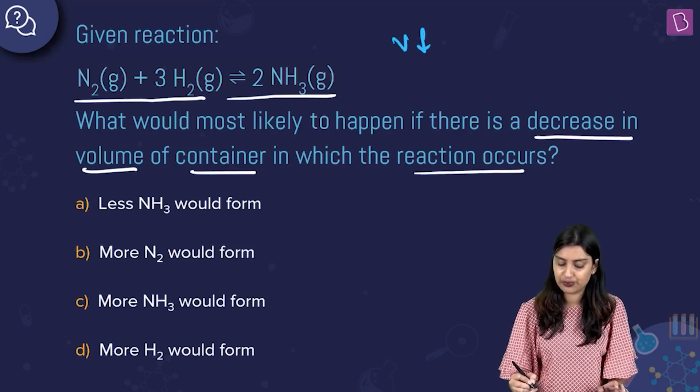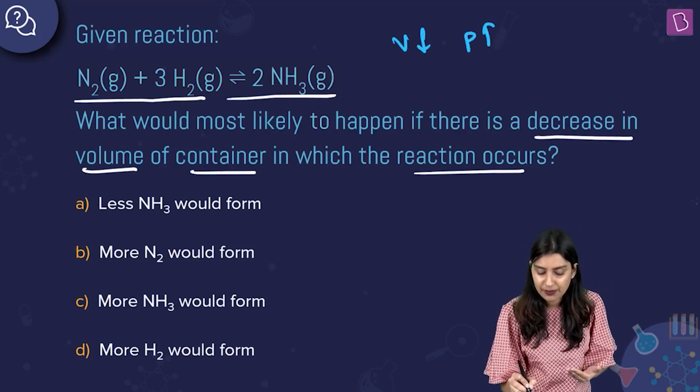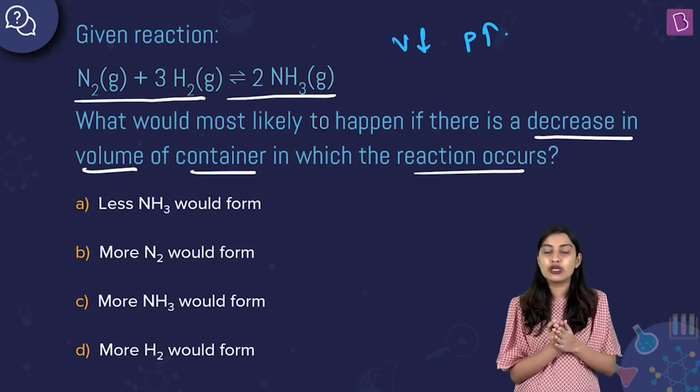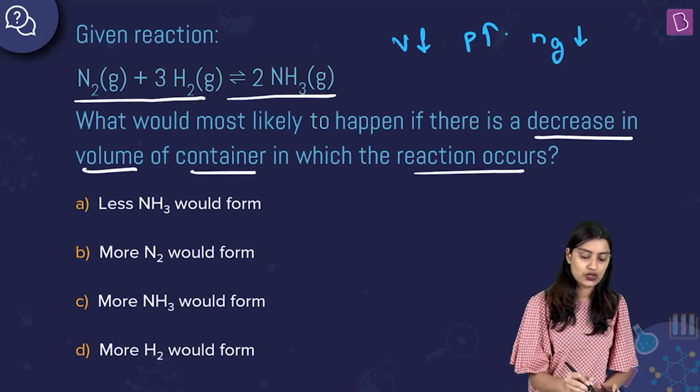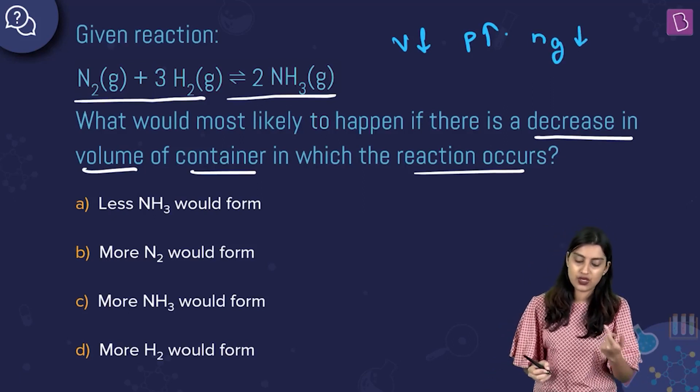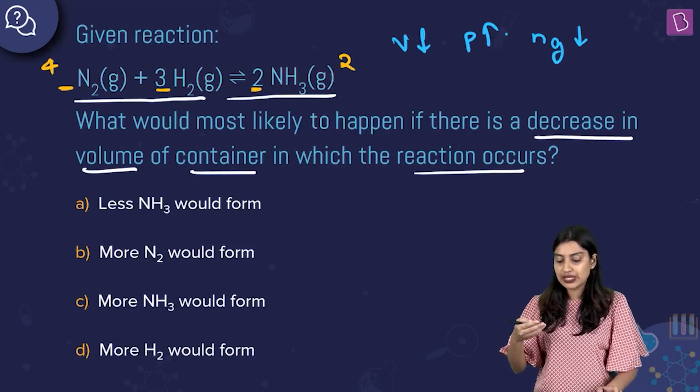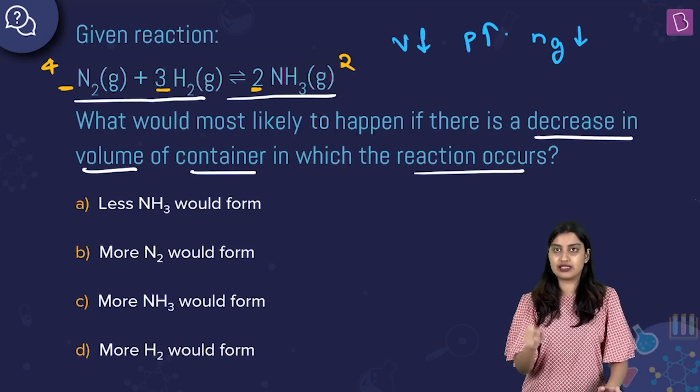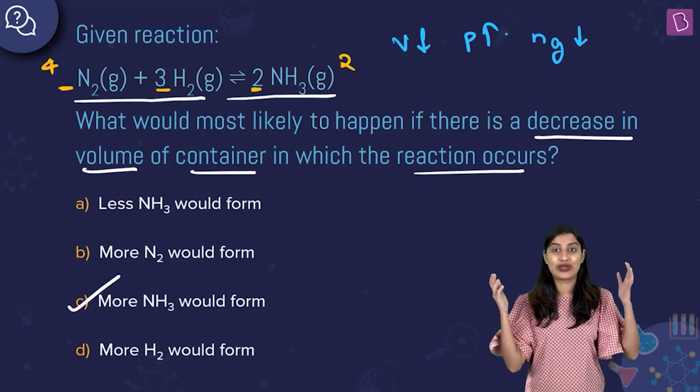Basically they're saying that you are reducing volume and reducing volume is basically having the same effect as increasing of pressure. When you increase pressure, what happens to equilibrium? When you increase the pressure, equilibrium will shift in a direction where your number of gaseous moles is lower. That means you have to first calculate where you have a lower number of gaseous moles. On the reactant side, you have 1 plus 3, which is 4. On the product side, you have 2. So as you increase the pressure, your equilibrium is going to shift in the forward direction or towards the product. Product is nothing but ammonia. So you will have more of ammonia formed. That means option C, more NH3 would form is going to be the right answer to this question.